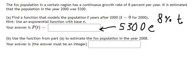Now, question B: use the function from part A to estimate the fox population in the year 2008. We know that at T equal to 0, we have 2000.